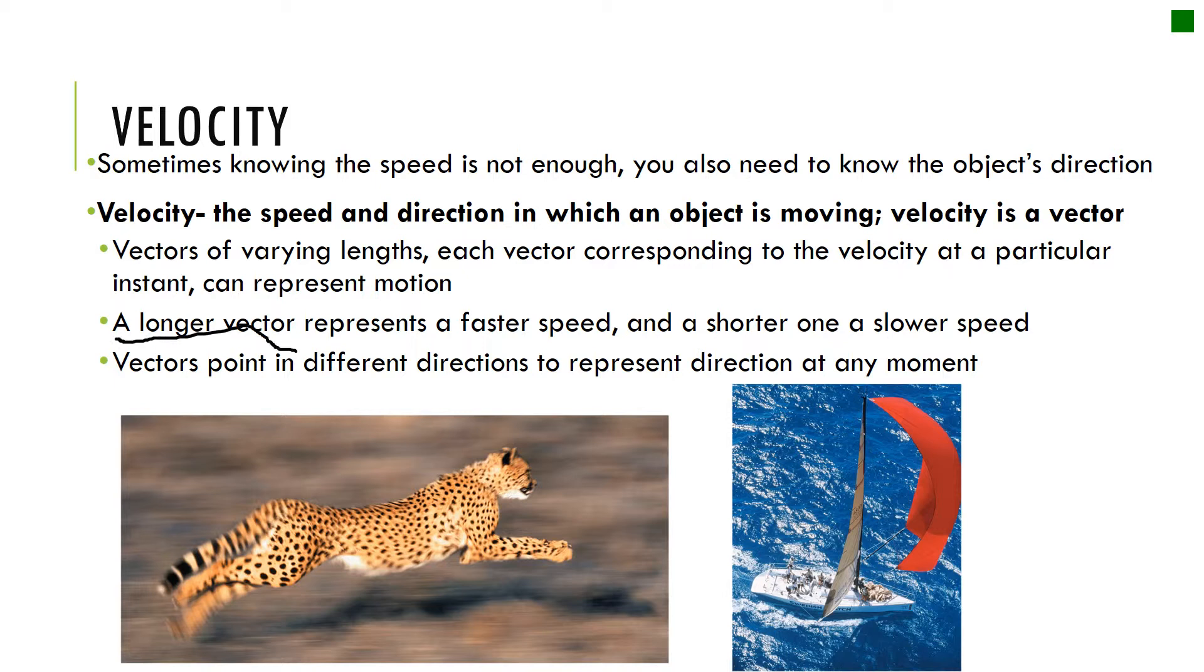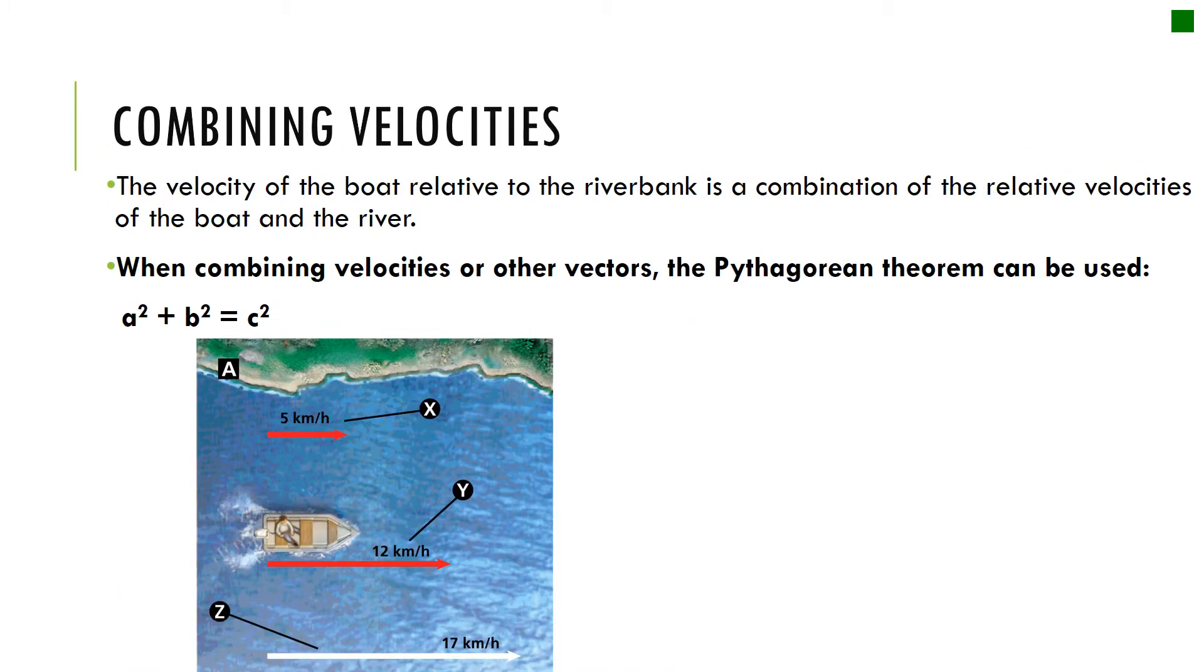This is super important to know. A longer vector represents a faster speed and a shorter vector represents a slower speed. It sounds really simple. I would just draw a short arrow to represent a slower speed and to represent a faster speed I would just draw a longer arrow. It's also going to be drawn in the direction that it's moving. These would be moving to the right, but we could also draw an arrow moving to the left depending on which way our object's moving.